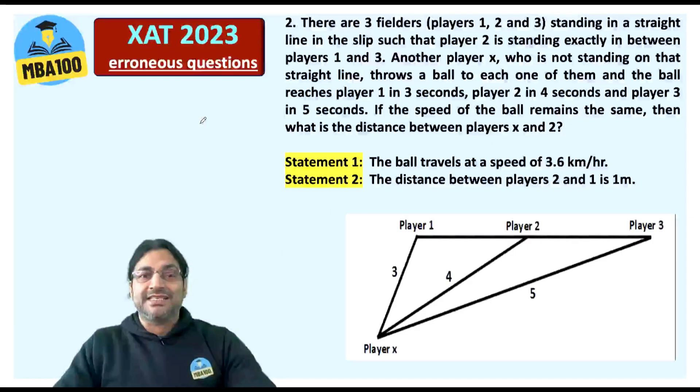This is what the question says. Here, you have player X, player 1 here, player 2 here, player 3 here. This was given that whatever is the distance between players 1 and 2, let that be X, the same is the distance between players 2 and 3.